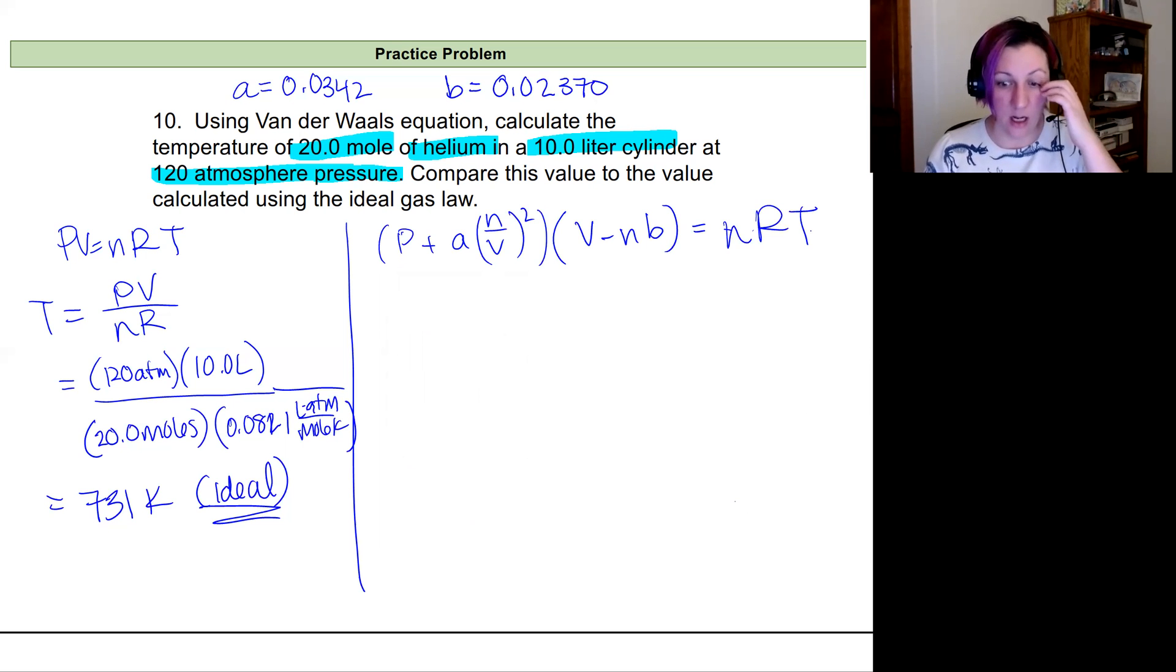So plugging all of our values in and solving for T. So I'm going to set T here equal to, and I'll have my pressure and volume divided by n and R. So let's go ahead and start adding these values in.